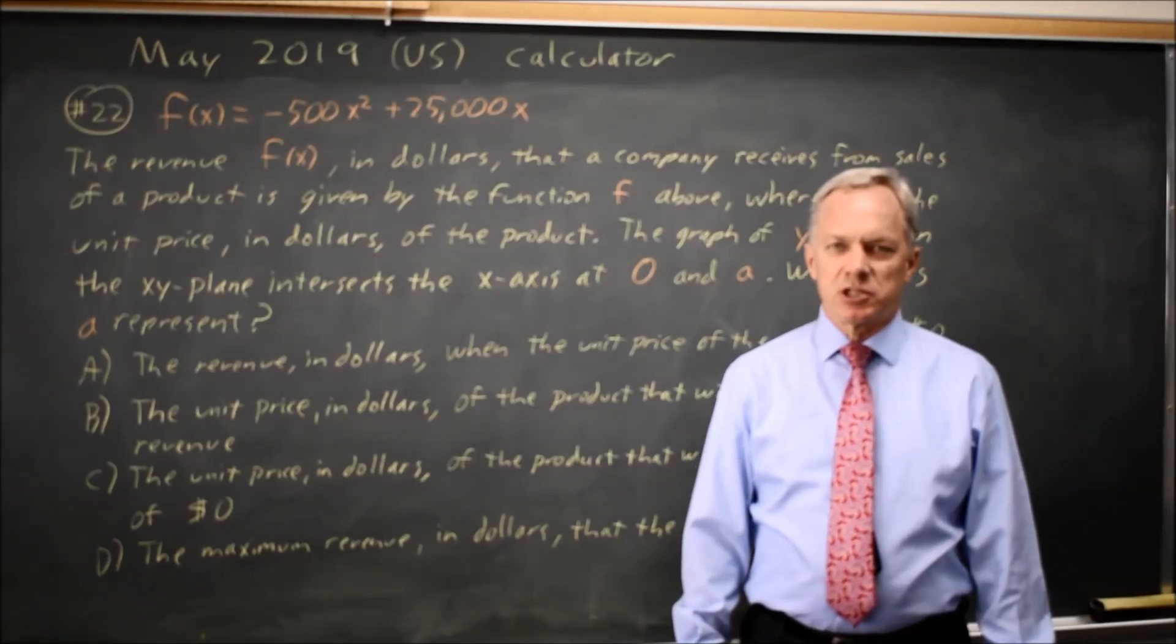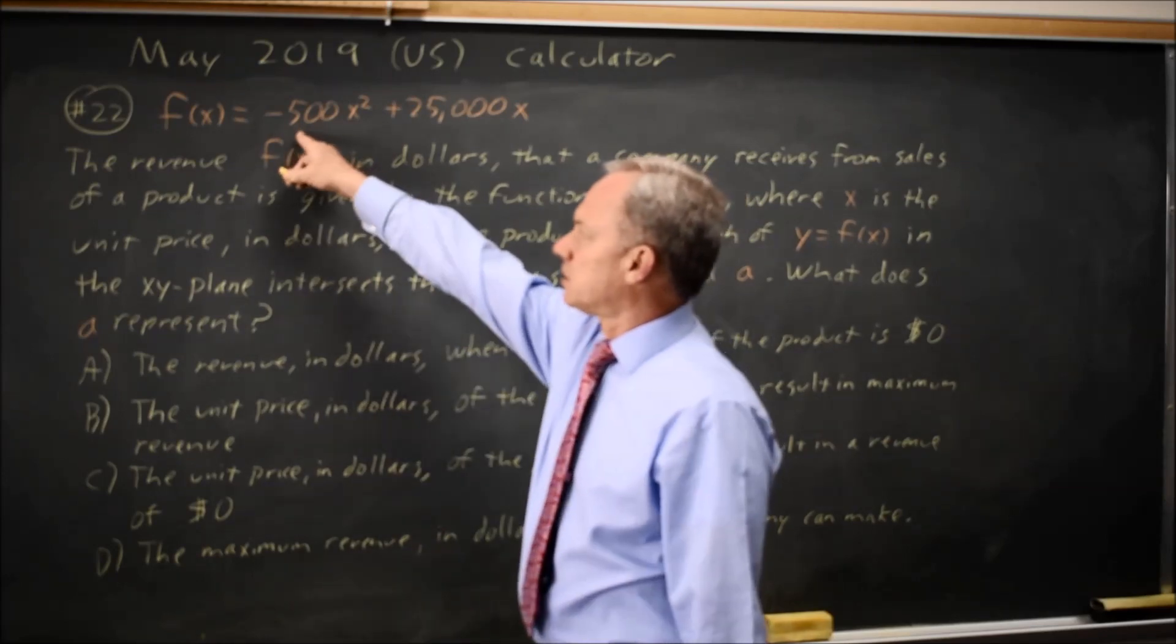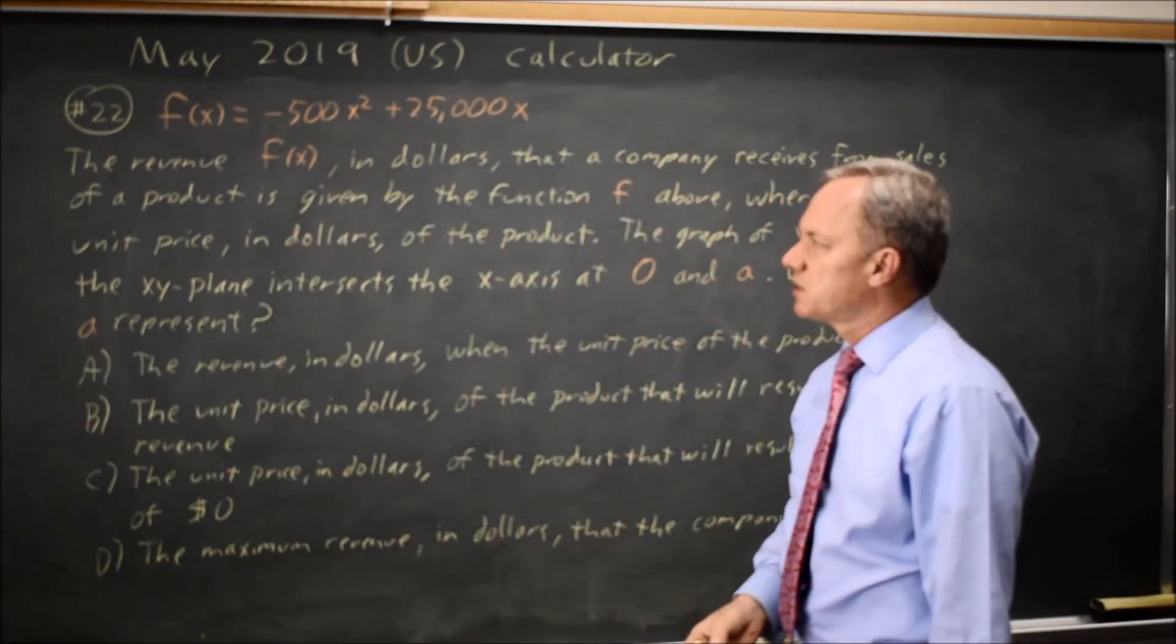This is calculator question number 22. The College Board gives us the equation of a parabola that opens down. You know it opens down because the x squared coefficient is negative.